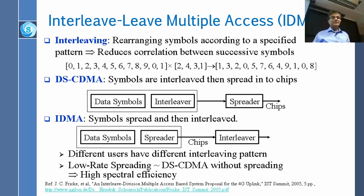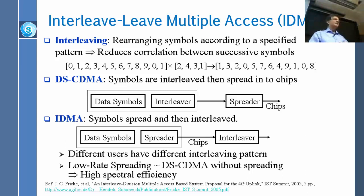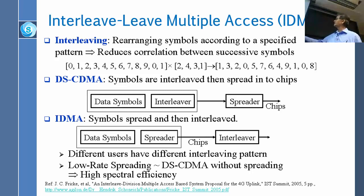A spreader takes one bit and makes multiple chips out of it — it spreads in time and frequency. In IDMA, the interleaver simply takes the chips coming out of the spreader. So what the interleaver receives are actually the chips from the spreader.